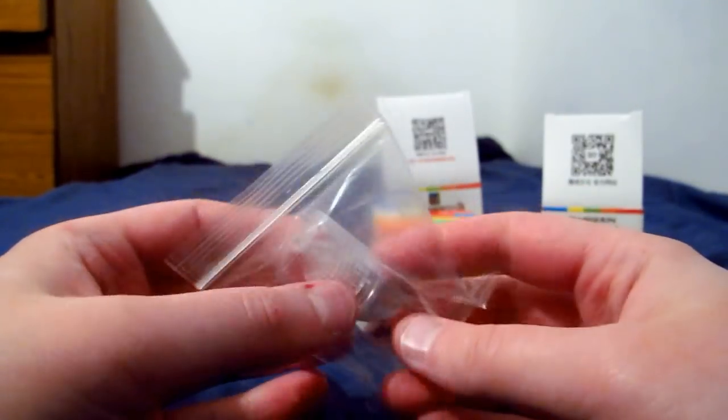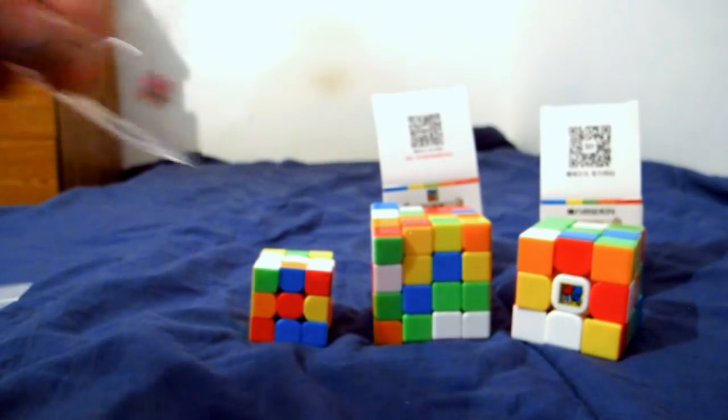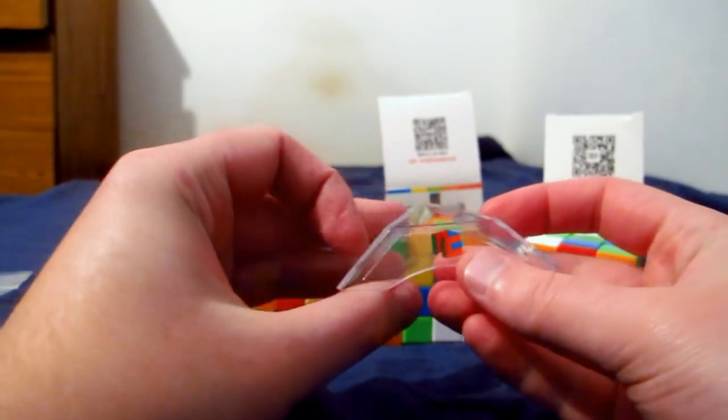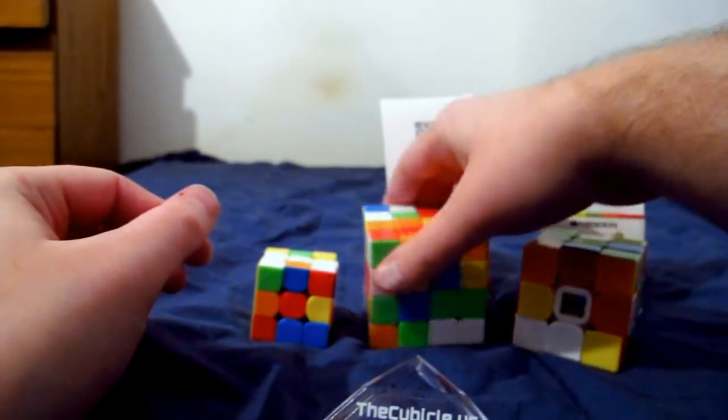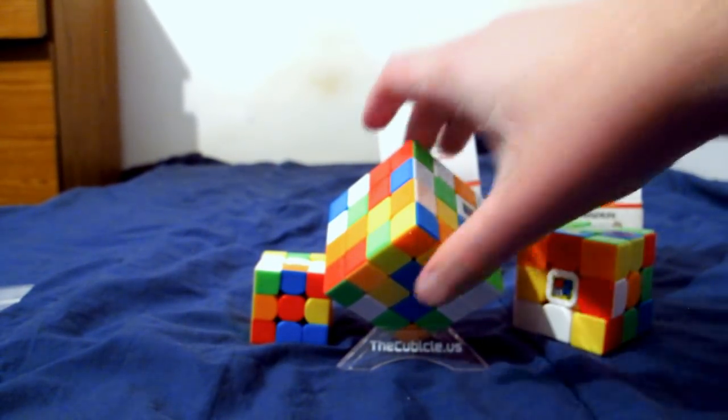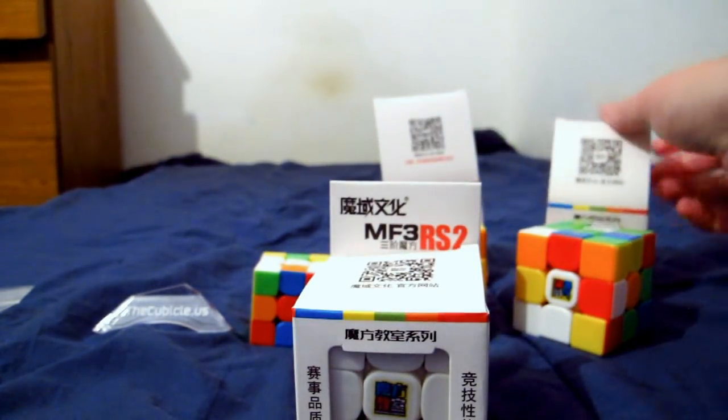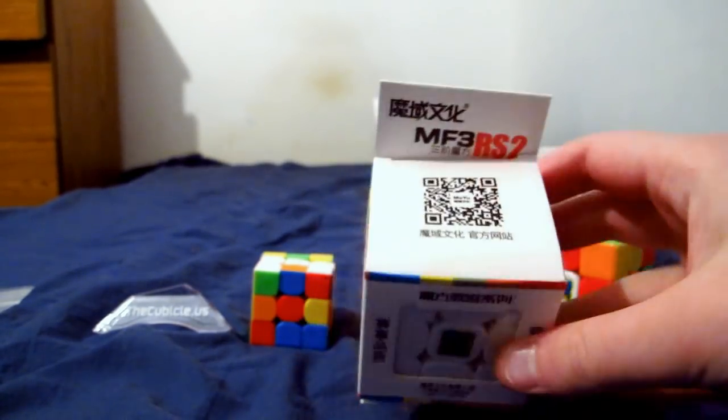I already used this to lube these cubes. I also got this free with that, it's a clear cubicle stand. You can request the color you get free on the Black Friday thing. I went for clear because I thought it looked pretty cool, like they're floating or something like that. I also got another MF3 RS2. Why would you get two of these? I'd like to try one without magnets and with magnets.